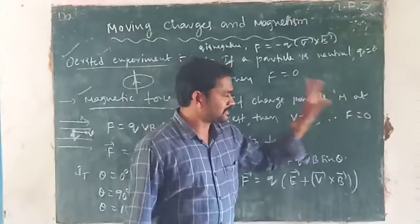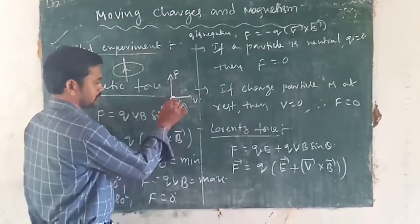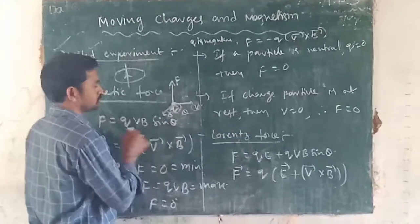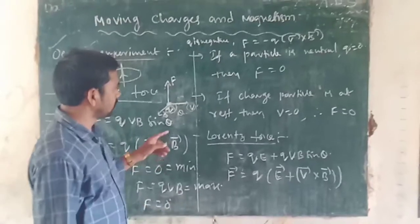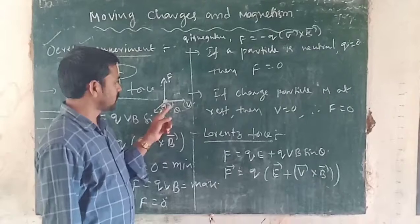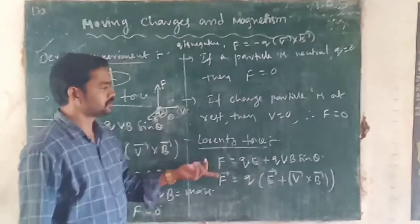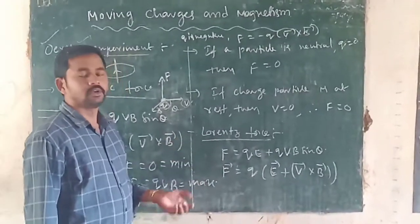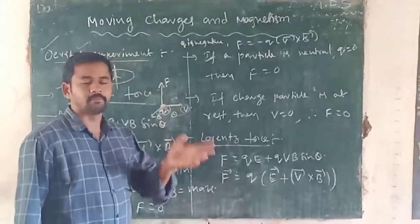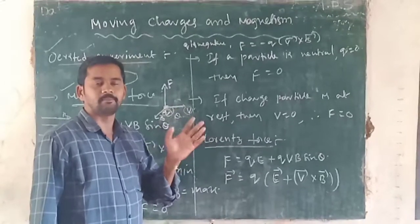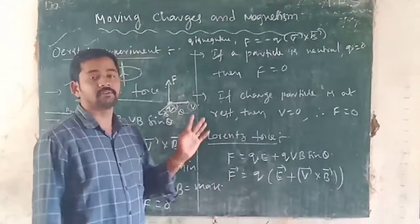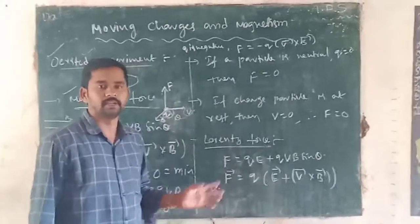So the magnetic force will be maximum only when the particle is moving in a magnetic field perpendicular to that magnetic field. The charged particle moving perpendicular to the magnetic field gives maximum force. In all other cases — particle neutral, particle at rest, or parallel to the field — force will be zero.